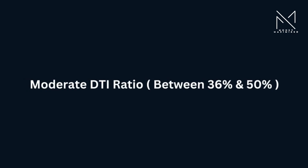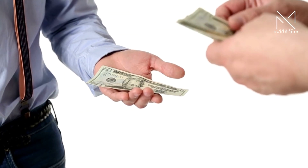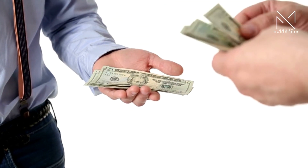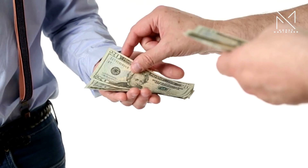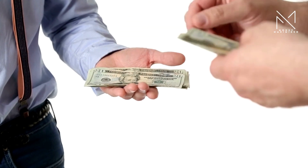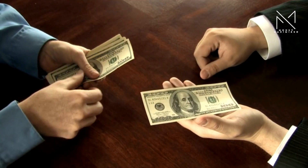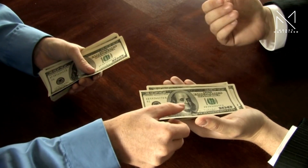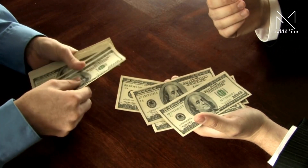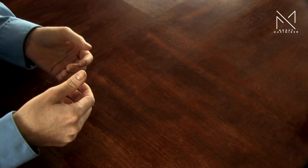Moderate DTI ratio: between 36% and 50%. A moderate DTI ratio shows that a significant portion of your income goes towards debt payments. Lenders may still consider this acceptable, but it might limit your ability to take on additional debt. High DTI ratio: above 50%. A high DTI ratio indicates that a substantial portion of your income is allocated to debt payments. Lenders may see this as a sign of financial stress and be hesitant to lend you more money.